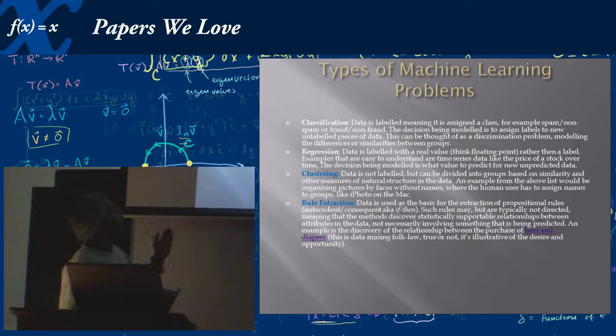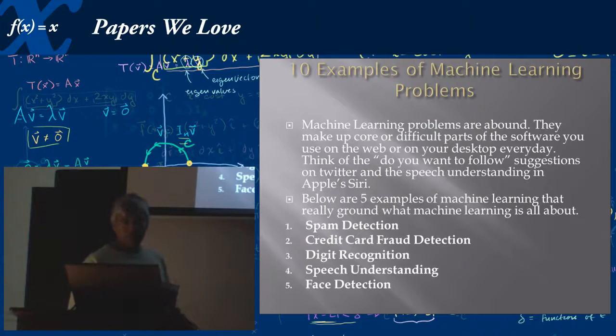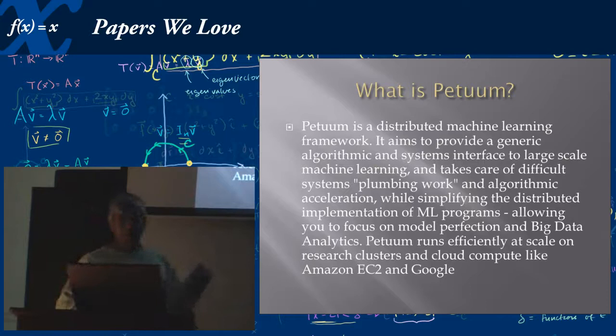So now, the thing is types of machine learning problems. Once again, I don't believe you guys should have to read through all these slides. What I'm trying to show here is that there are various machine learning problems that are well-defined. I've highlighted clustering and rule extraction because I believe these are the areas focused on in this paper. Ten examples of machine learning problems - I've shown you five. Machine learning has many uses, many important uses: credit card fraud detection, spam detection, facial recognition.